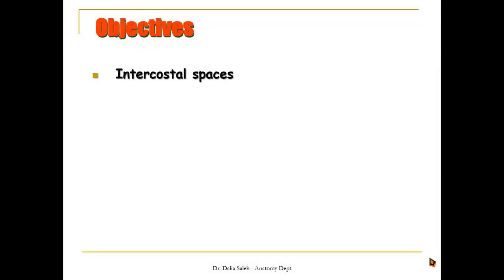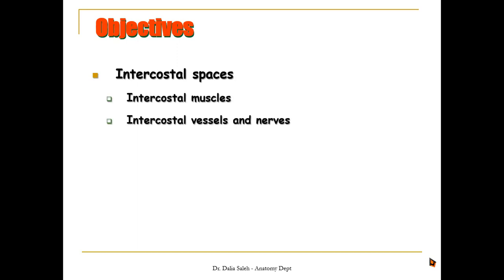I'm going to cover the following objectives. First, the anatomy of the intercostal spaces including the intercostal muscles, the intercostal vessels and nerves, and finally the diaphragm.